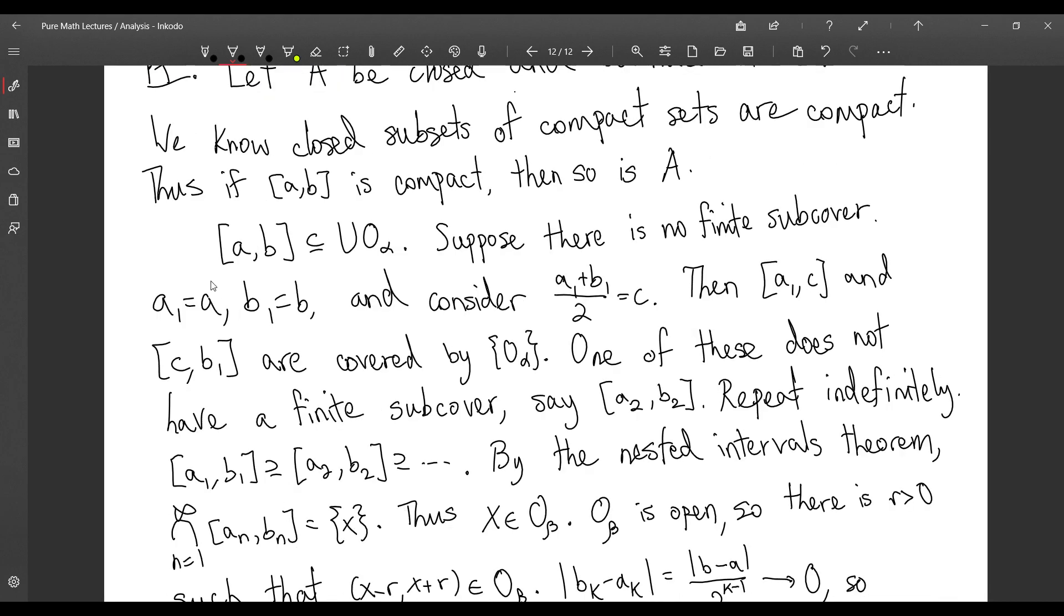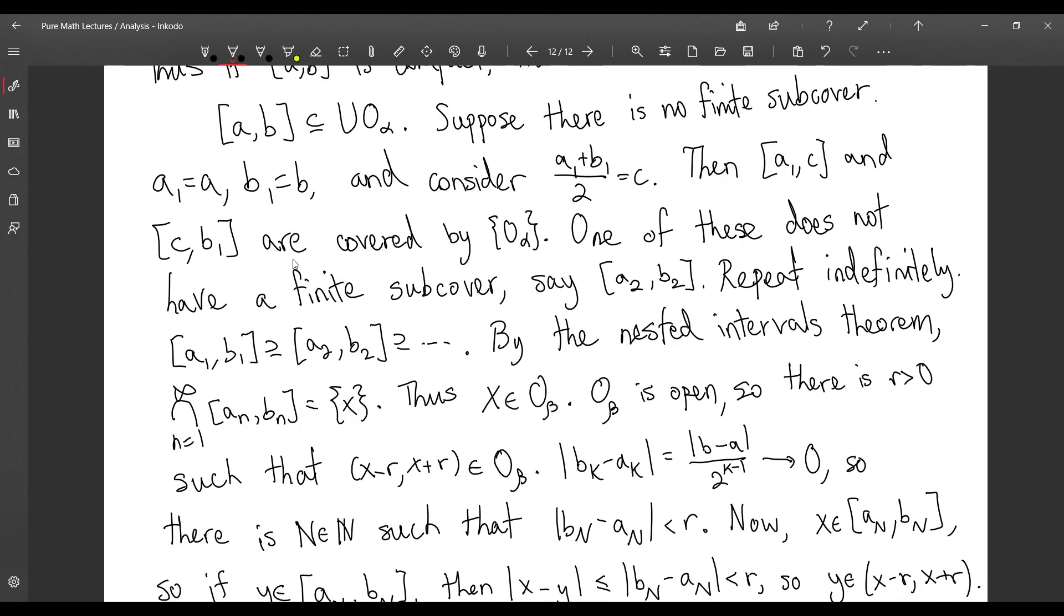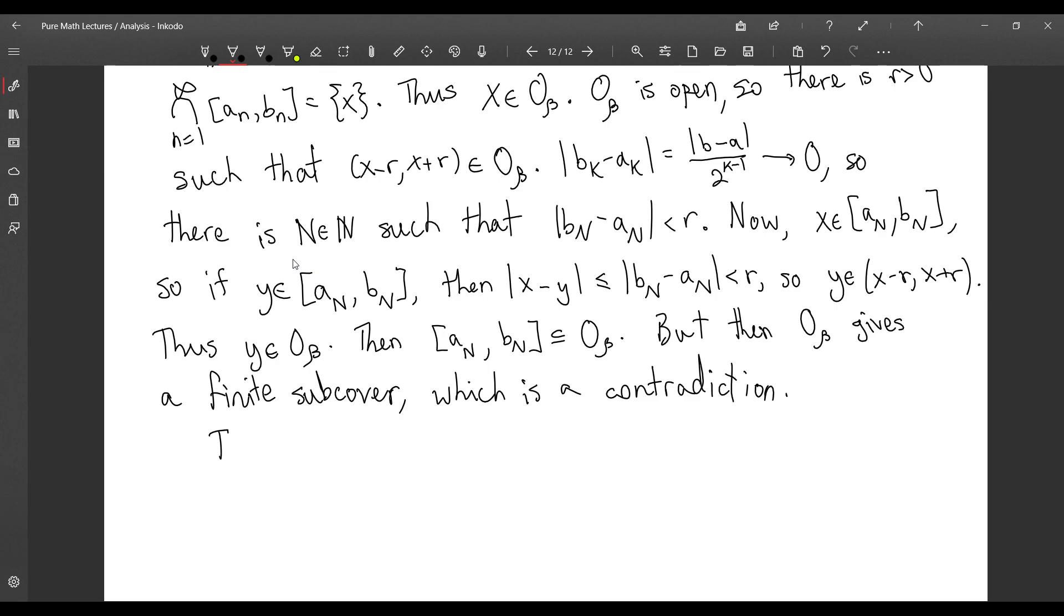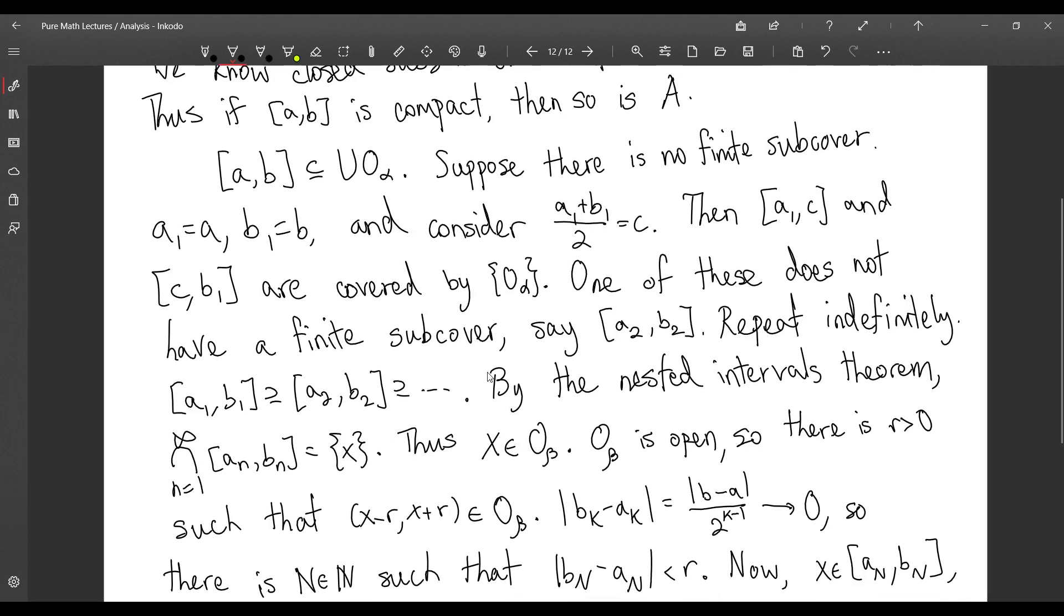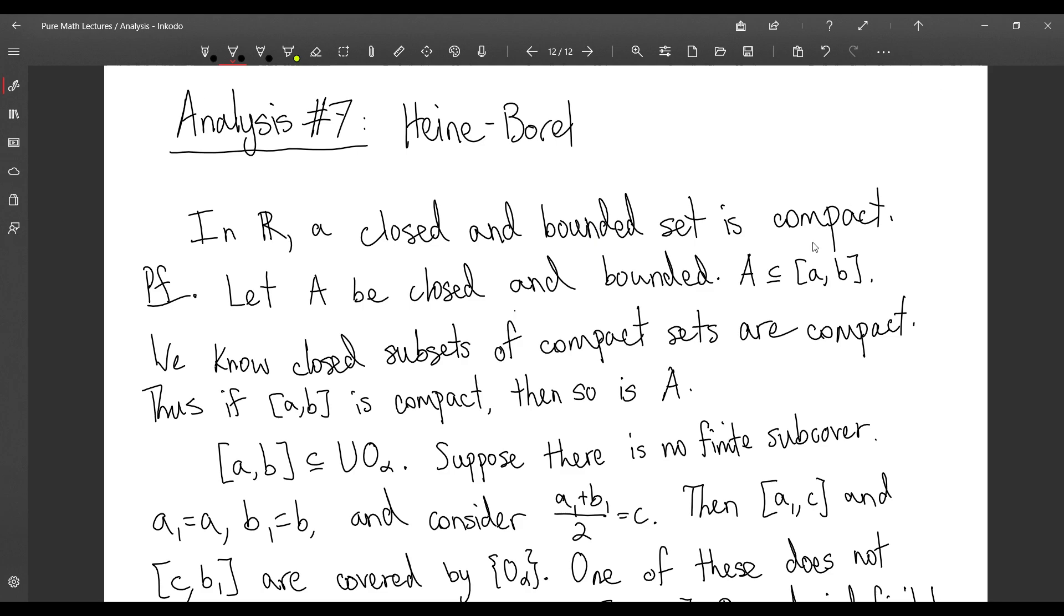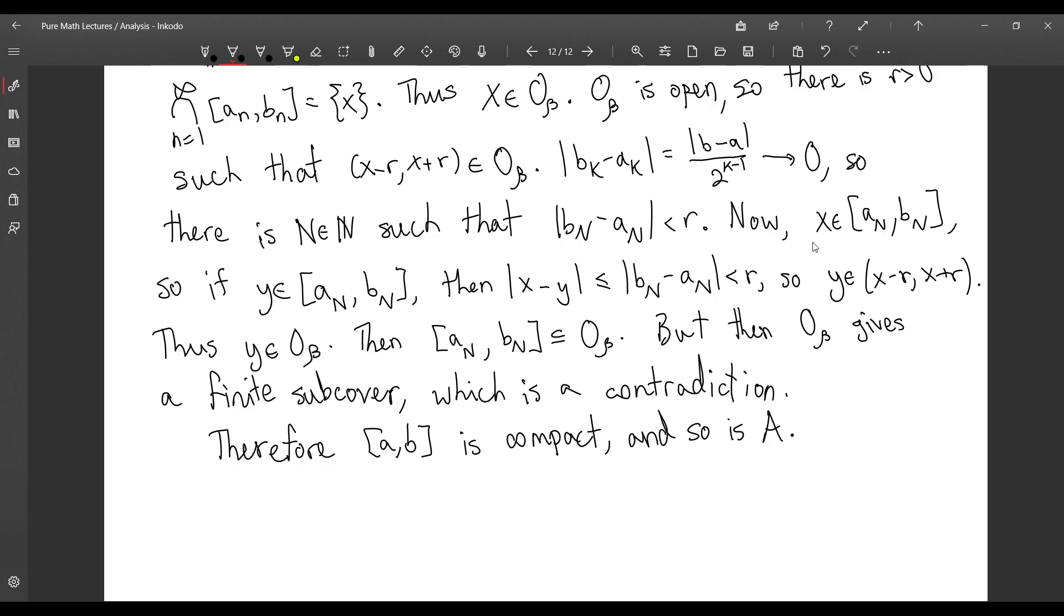Therefore, our assumption that the interval from A to B, we assumed it was not compact, and we got a contradiction. Therefore, the interval from A to B is compact, and so is A. And that's the end of the proof. So, all in all, we showed that a closed and bounded set in R is compact. And we said last time that a compact set in a metric space is closed and bounded. So, therefore, in R, closed and bounded is exactly equal to compactness.